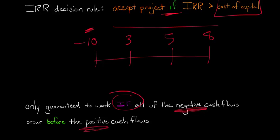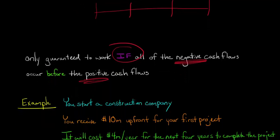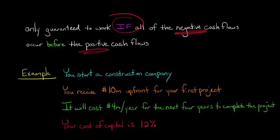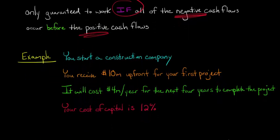However, if that is not the case, for example a delayed investment, IRR might break down. So let's say that you started your own construction company, and you receive $10 million up front to do your very first project. So you've got the $10 million in the bank, but you still have to go and build this building or whatever your project is, and that's going to cost you $4 million a year for the next 4 years in order to complete that project. So if we were going to think about mapping out your cash flows, let me just change colors here.